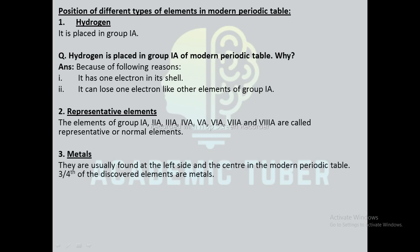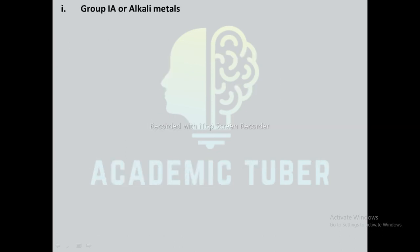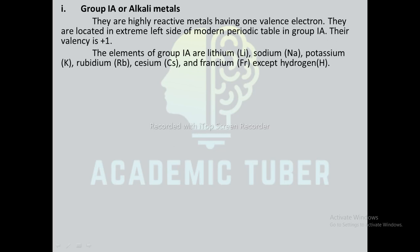Metals: they are usually found at the left side and at the center of the modern periodic table. Three-fourths of the discovered elements are metals. On the basis of properties, metals are further classified into alkali metals, alkaline earth metals, transition metals, inner transition metals (rare earth metals), lanthanides, and actinides. Alkali metals (group 1A) are highly reactive metals having one valence electron, located in the extreme left side of the modern periodic table. Their valence is +1. The elements of group 1A are lithium, sodium, potassium, rubidium, cesium, and francium, except hydrogen.